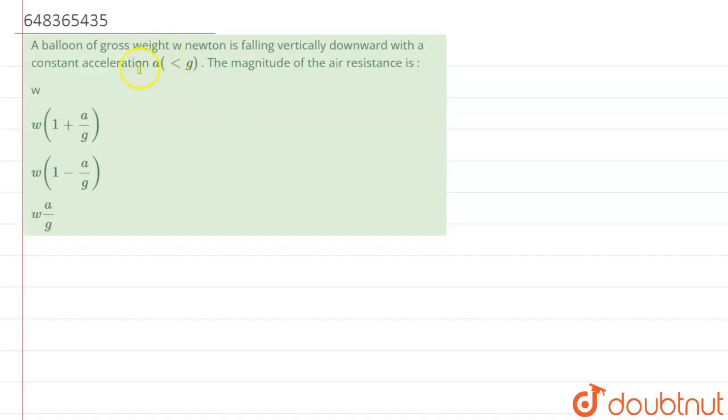Hello students, now we're going to see this question. The question says that a balloon of gross weight W newtons is falling vertically downwards with a constant acceleration of a, which is less than g. The magnitude of air resistance is?